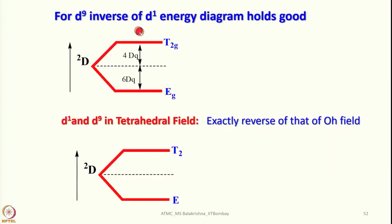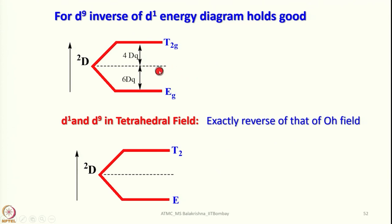D9 is the inverse of the D1 energy diagram — if you reverse the energy levels and consider electron transitions, it is very similar to D1. You should not get confused with tetrahedral splitting: this is actually an octahedral complex for D9 considering hole promotion. Taking D1 and reversing it gives D9, which is exactly the reverse of the octahedral field. In the tetrahedral case, 2D splits into E and T2.